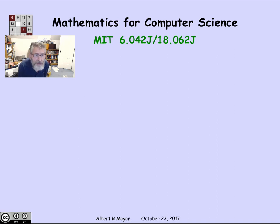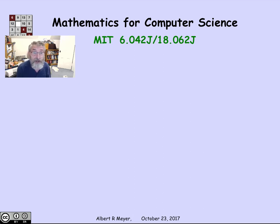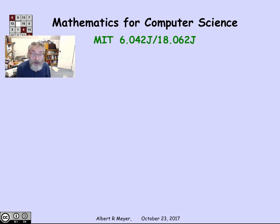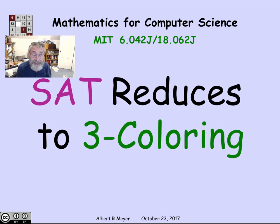It's pretty hard to color graphs according to the no-conflict rule. As a matter of fact, it's even hard to color a graph with just three colors — that is, to figure out whether the graph can be colored with three colors. And I'm going to explain in this little video just why. The reason is that the notorious satisfiability problem for propositional formulas reduces to three-coloring.